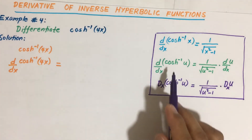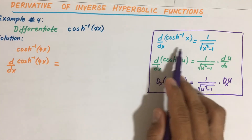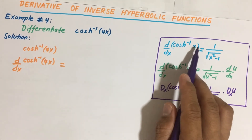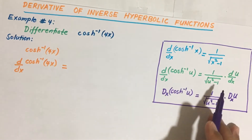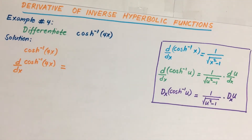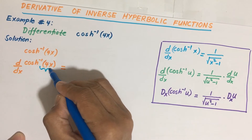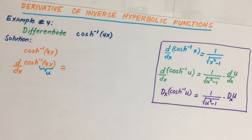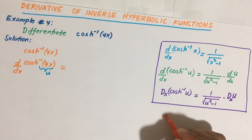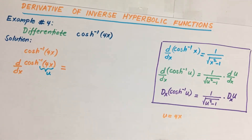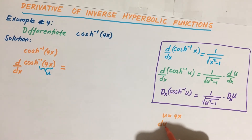This is the general form, while the other is more specific with the argument exactly equal to x. Continuing with our given problem, our u is equal to 4x. Therefore, the derivative of u with respect to x is simply equal to 4.